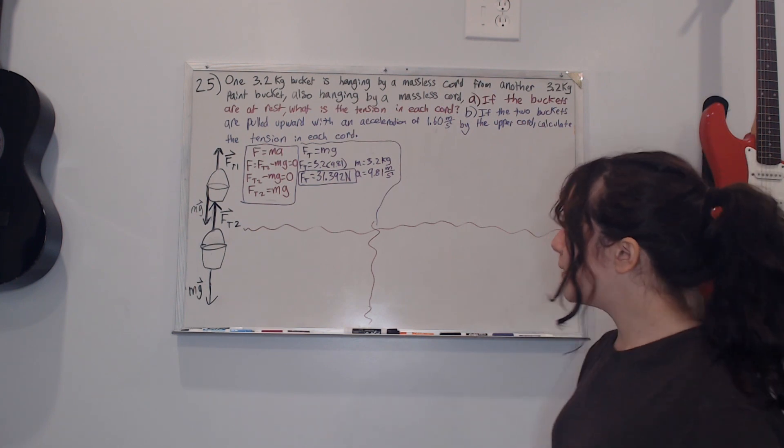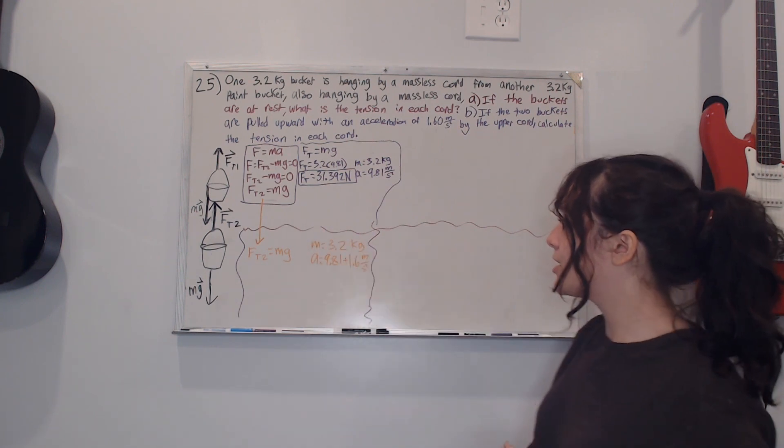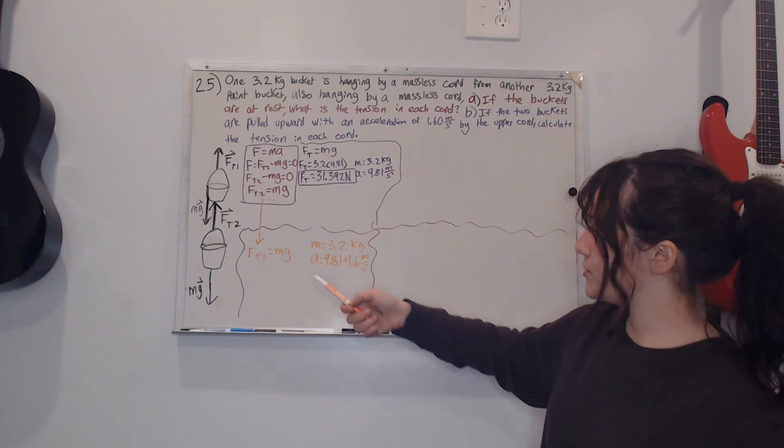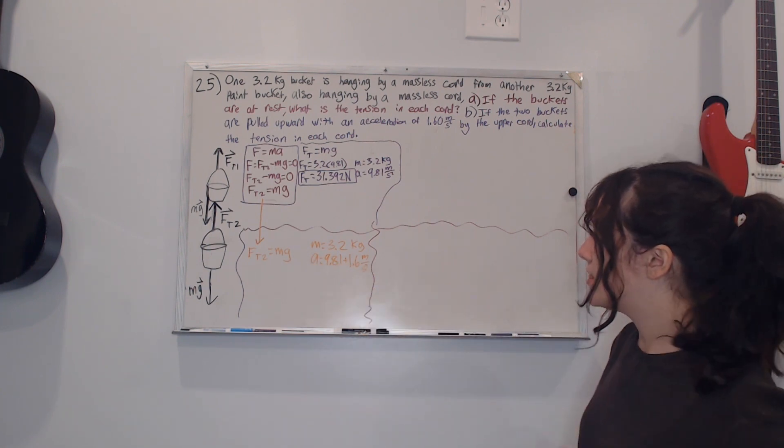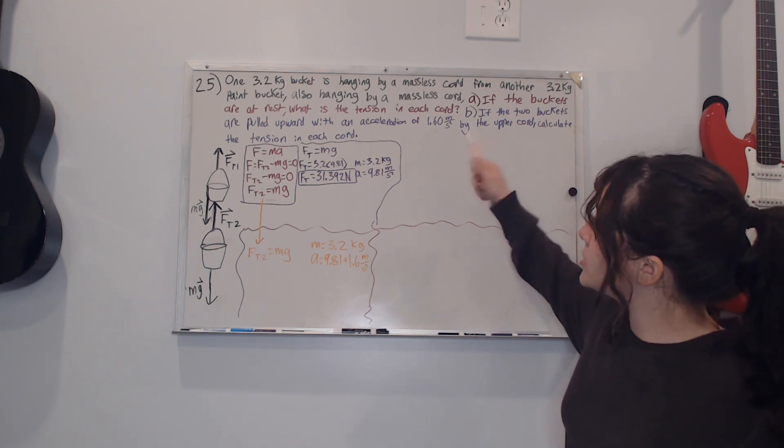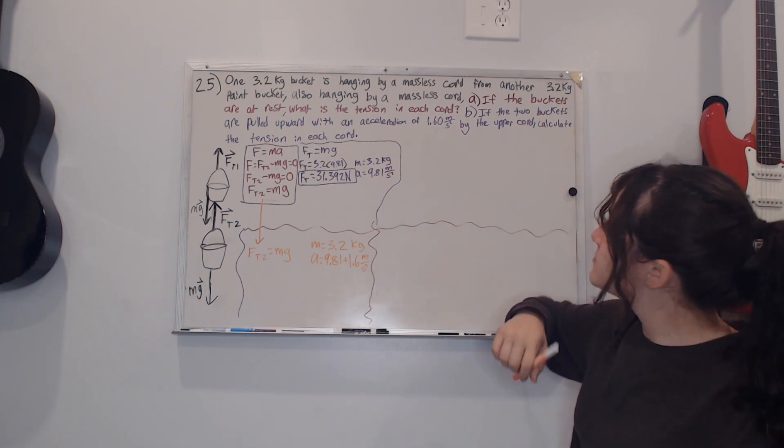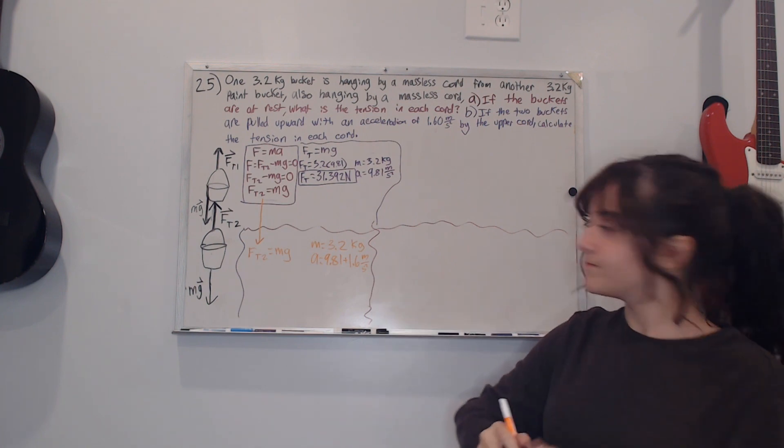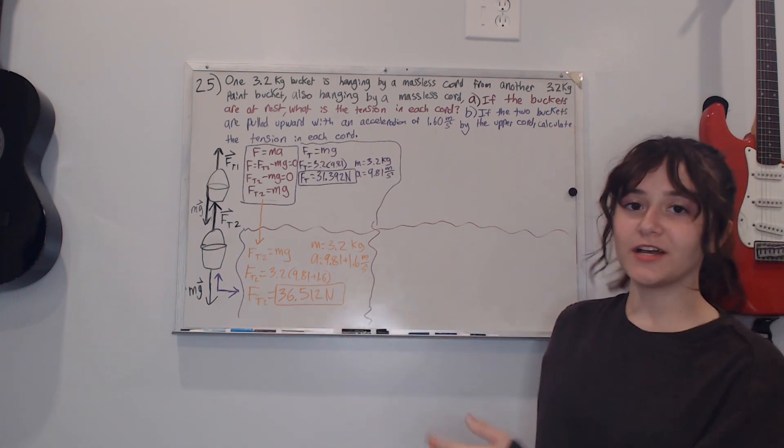I rewrote the equation that I originally got here and I wrote down what we have as our mass which is just 3.2 because we're looking for the tension between one bucket. Then the acceleration is 9.81 plus 1.6 because the question tells us that it's being pulled upward with 1.6 meters per second squared, so we just add the two and then plug it in. I added my axes because I originally forgot to write it, and I also plugged this into the calculator which gives me 36.512 newtons.